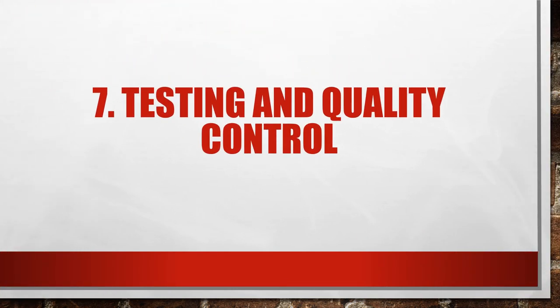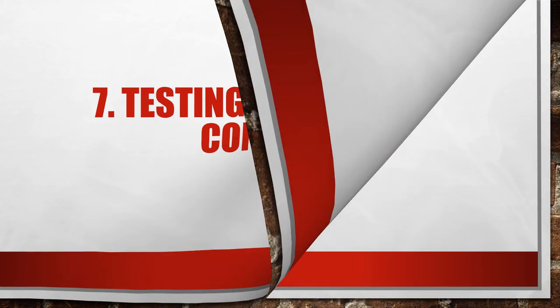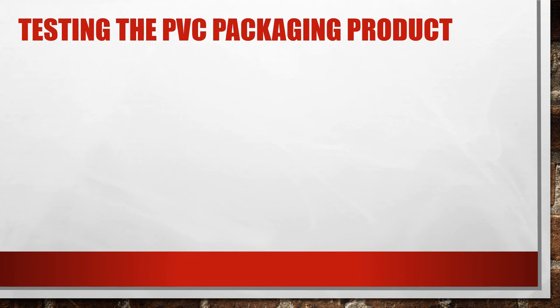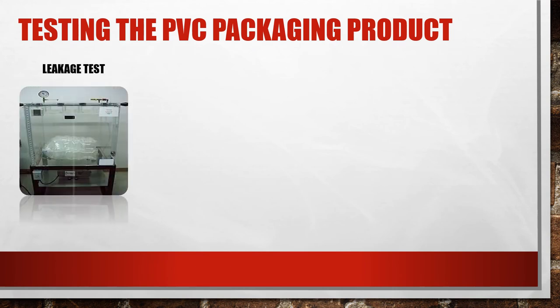Chapter 7: Testing and Quality Control. Testing the PVC packaging product — Leakage Test. Submerge the specimen in an immersion fluid in a vacuum chamber and apply vacuum above the chamber. If consecutive bubbles are observed in the vacuum chamber, the specimen fails the leakage test because there is the presence of leaking.